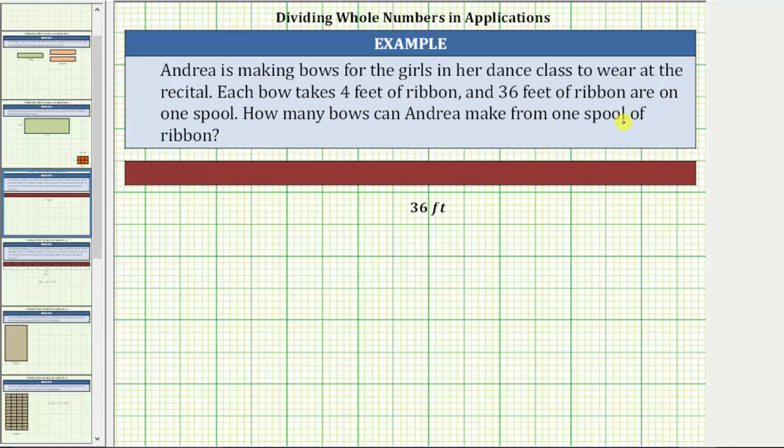If we take one spool of ribbon and unroll it, it has a length of 36 feet as represented by this strip. Because each bow takes four feet of ribbon, to determine how many bows Andrea can make from one spool of ribbon, we need to determine how many lengths of four feet are in 36 feet or how many copies of four are in 36.